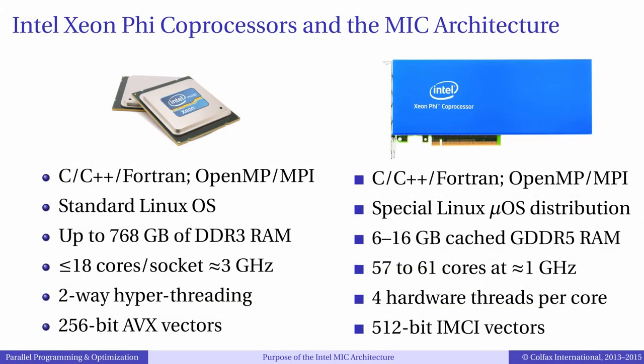The key common feature is that both Xeon and Xeon Phi can run applications compiled from the same source code. That applies to languages, parallel frameworks, and most importantly, performance optimization methods — those are common for multi-core CPUs and many-core Xeon Phi Co-Processors. C, C++, and Fortran programming languages are supported by both architectures. Standard parallelization frameworks such as OpenMP and MPI are supported by both as well.